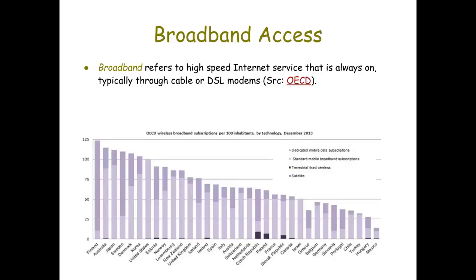Broadband access is definitely an issue. If you have access to the internet but not broadband access — broadband referring to high-speed internet service — you may not be able to use the web as effectively. If you have broadband, that usually means you have it through a cable or DSL modem. DSL is a digital subscriber line, one that's connected via your home telephone network.